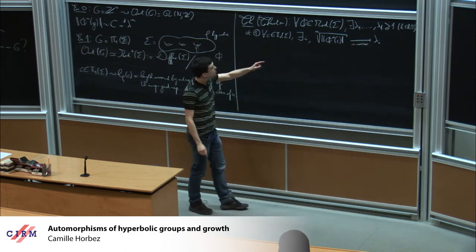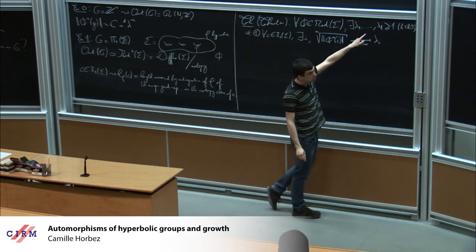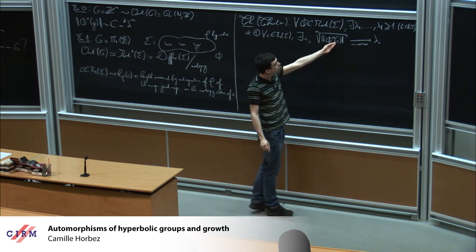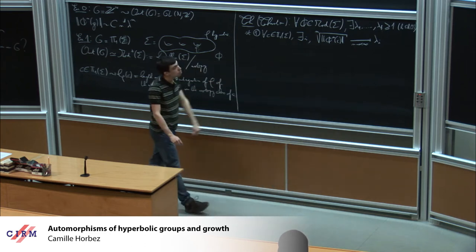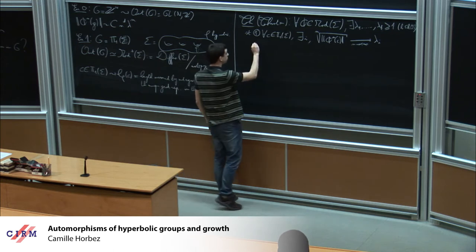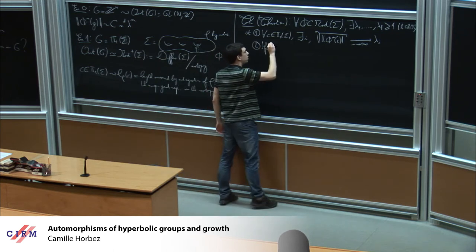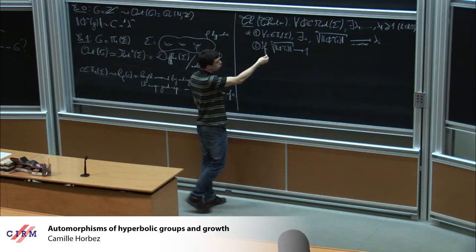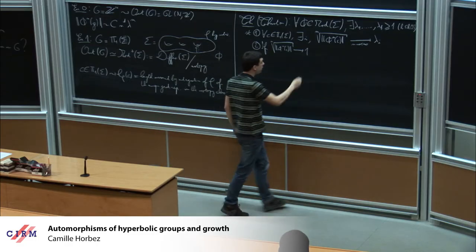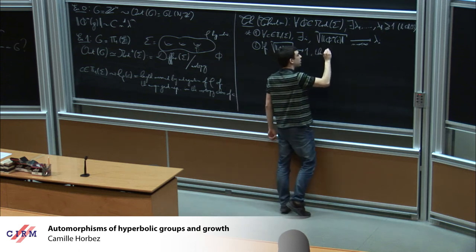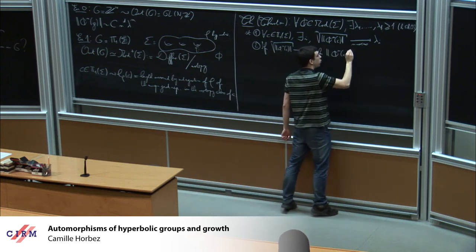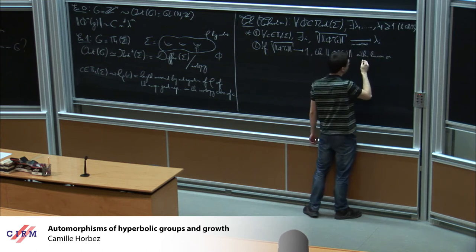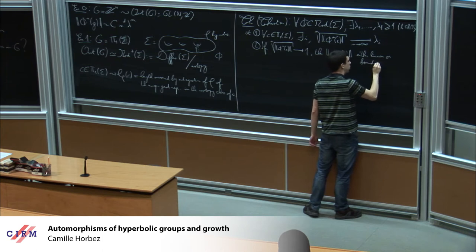It may happen that one of the lambda_i's equals one, meaning you have curves that grow sub-exponentially under iteration of phi. In this case you can say better: if you have a curve that grows sub-exponentially under iteration of phi, then actually its growth is either linear or its length is just bounded under iteration of phi.